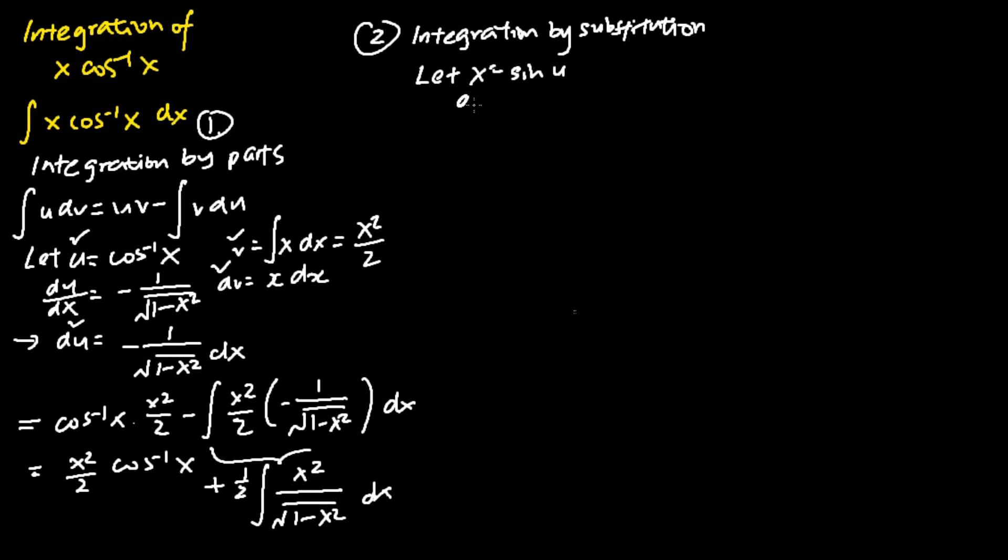And we differentiate x with respect to u. This gives me cosine u, in which multiplying both sides by du, I get dx equals cosine u du.